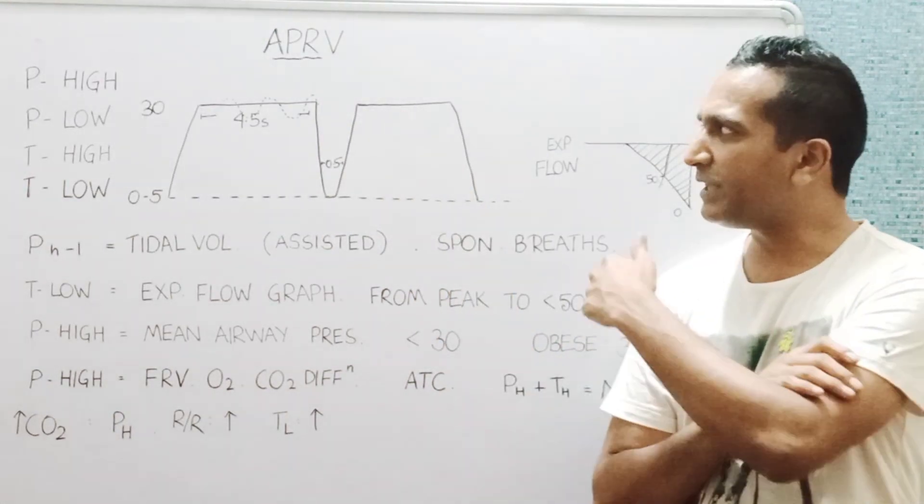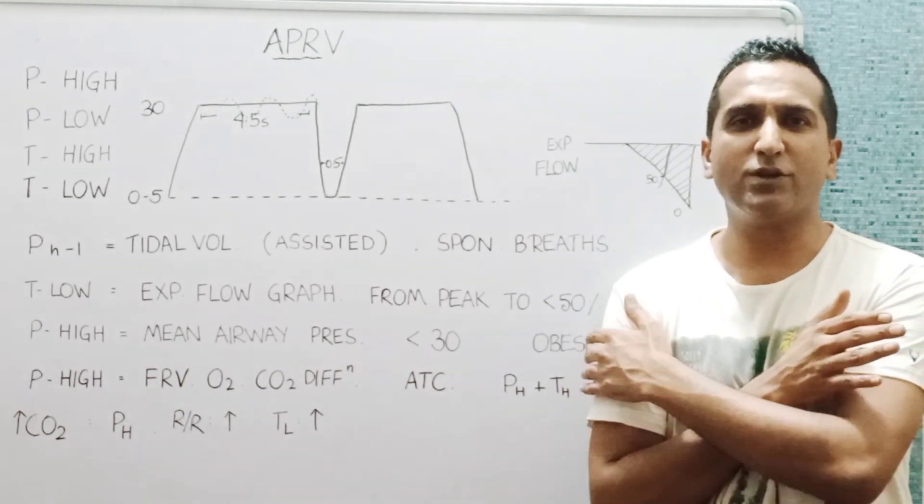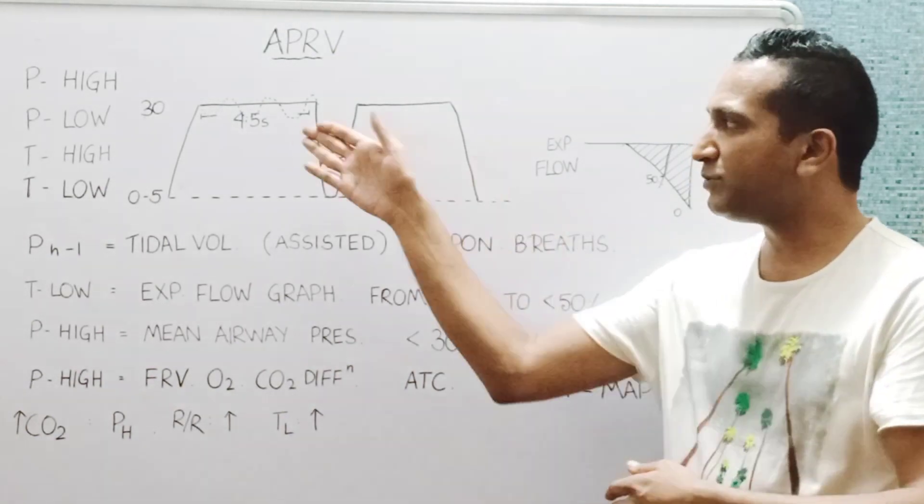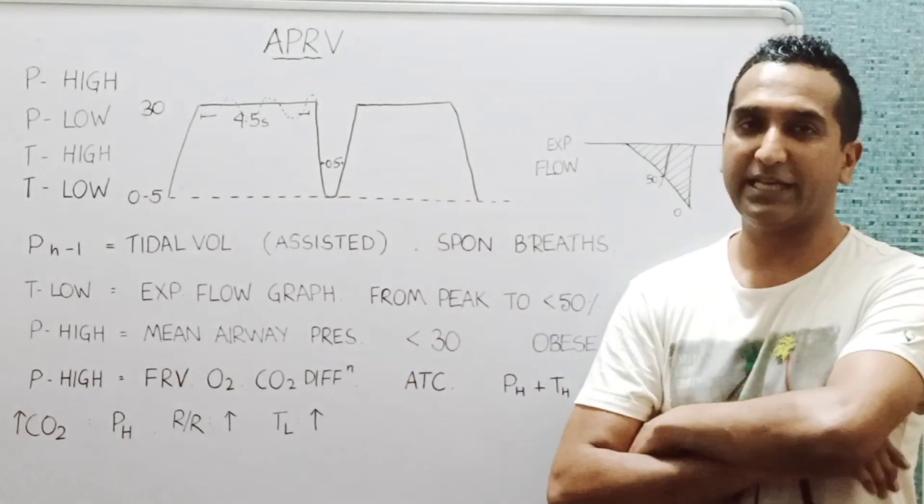So some amount of minute ventilation will be generated from these spontaneous breaths, and the other will be generated by the difference between the P high and the P low. We can partition the two, so to begin with we can allow 20 to 30 percent of all minute ventilation to be generated by patient efforts and the rest by the difference between the P high and the P low.